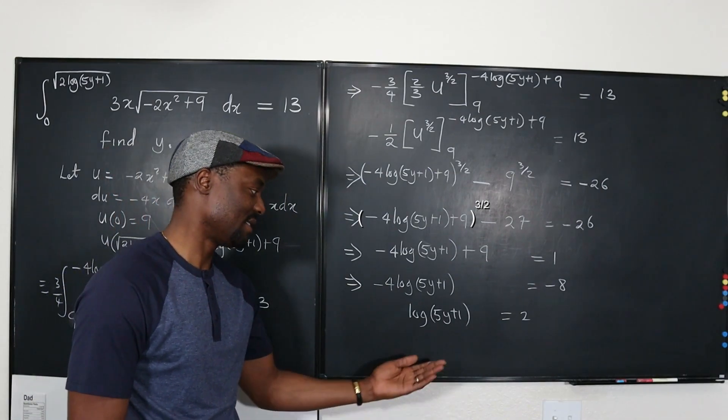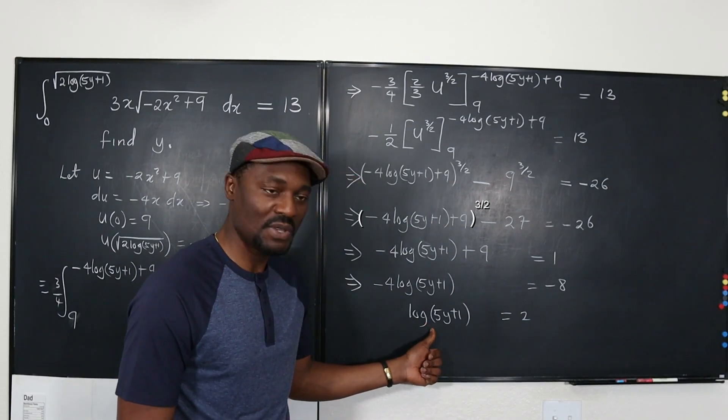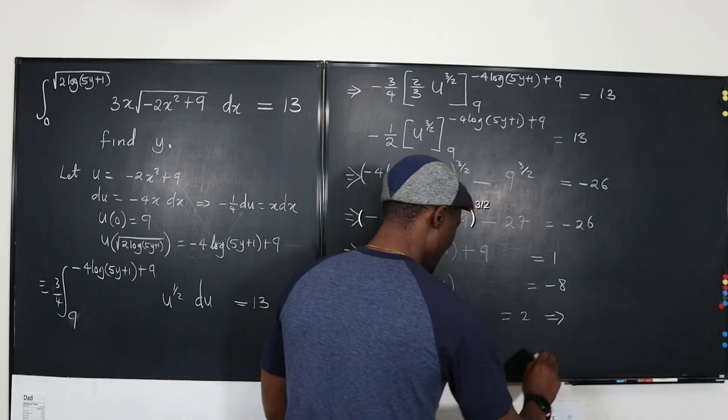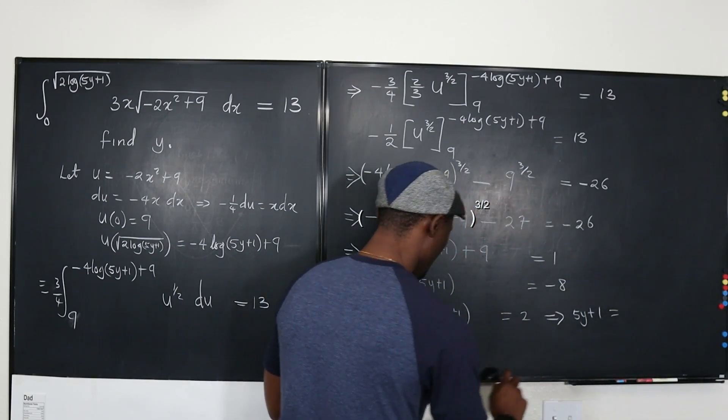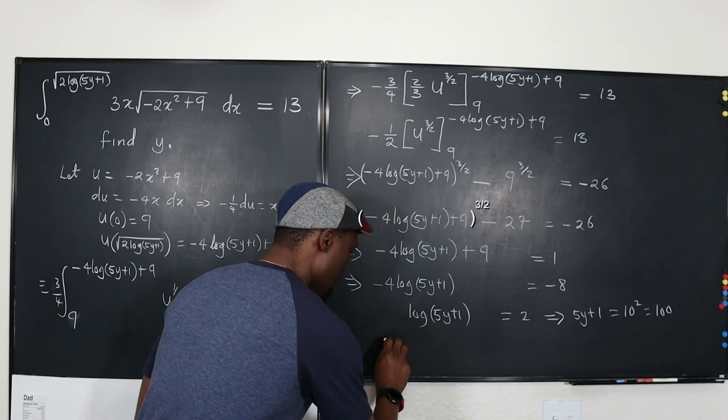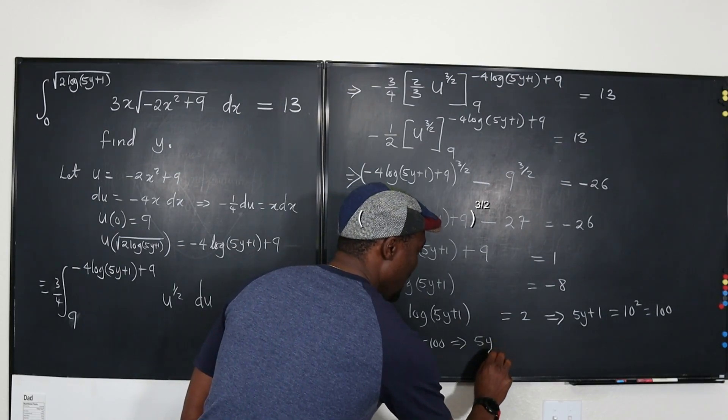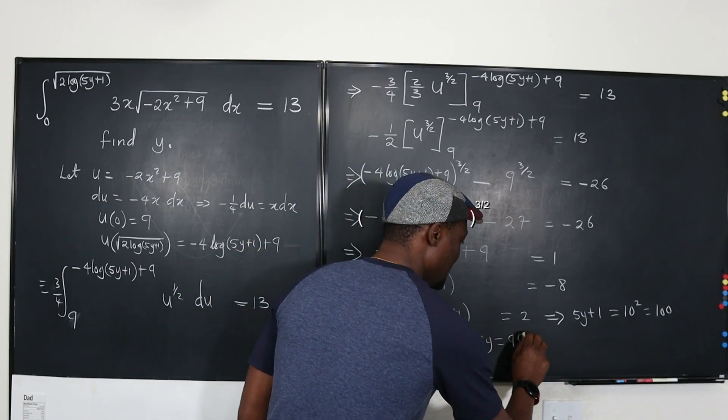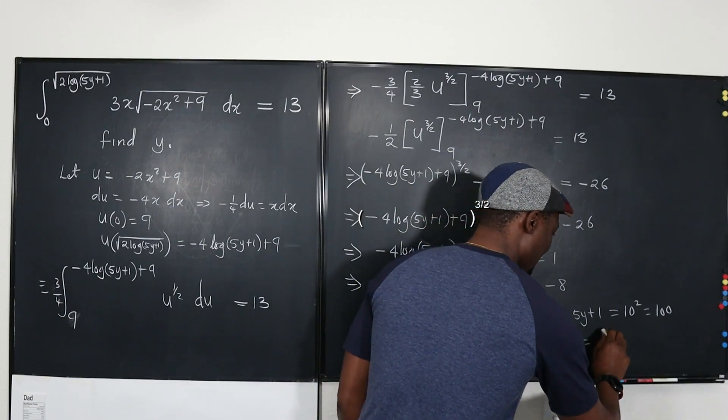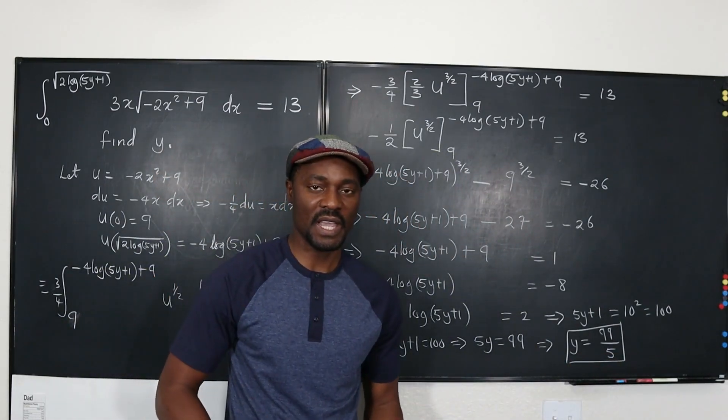Now we can solve this one because this is just algebra. This is a precalculus logarithmic equation kind of problem. Well, because this logarithm is in base 10, you know that for you to get this, it means this implies that 5y plus 1 is equal to the base raised to power 2, which is 10 to the power 2, which is 100. So, as you can see, 5y plus 1 equals 100, which implies 5y equals, if you subtract 1 from both sides, that's going to be 99, which implies that y equals 99 over 5.